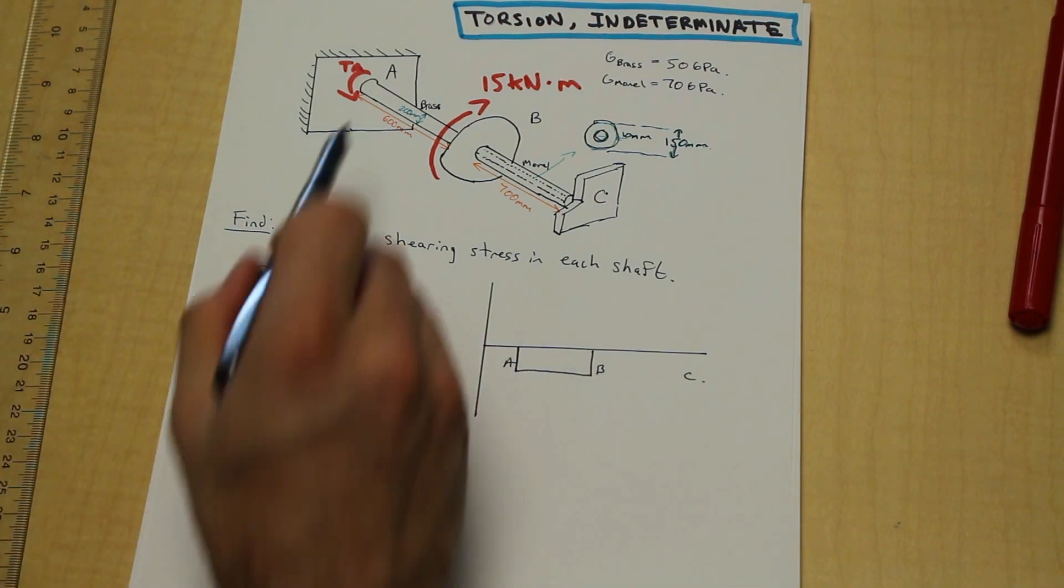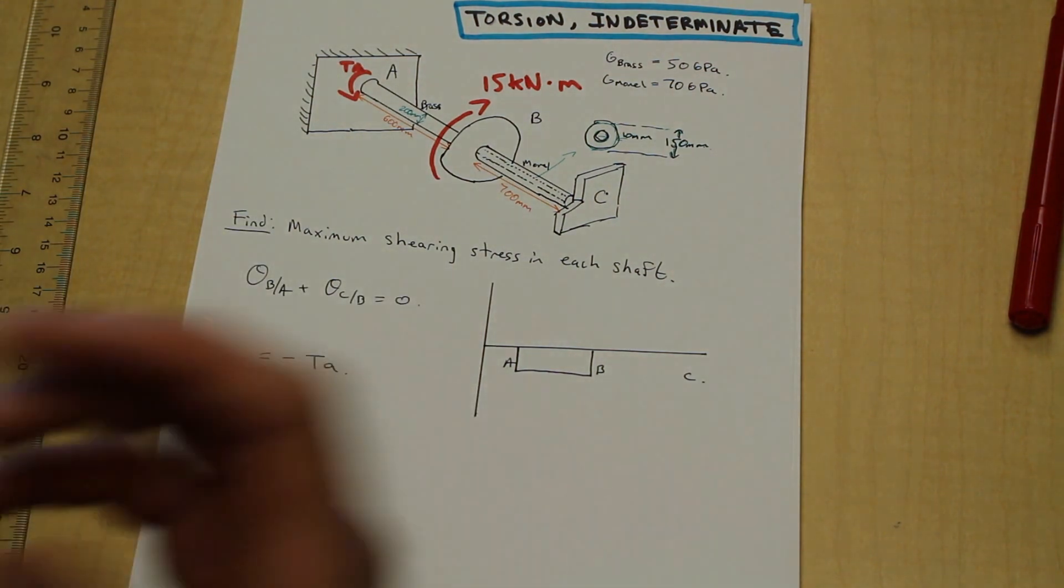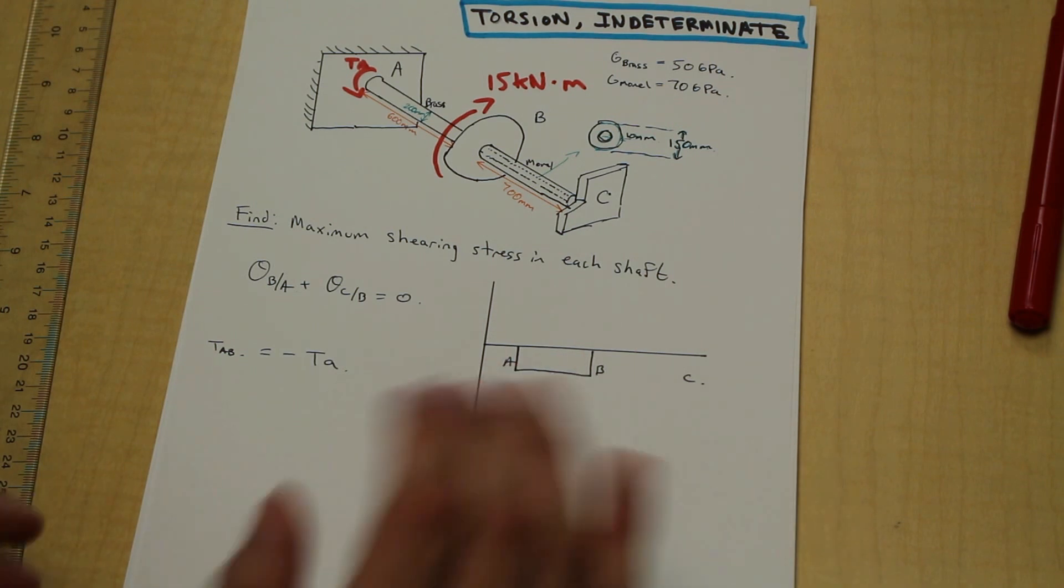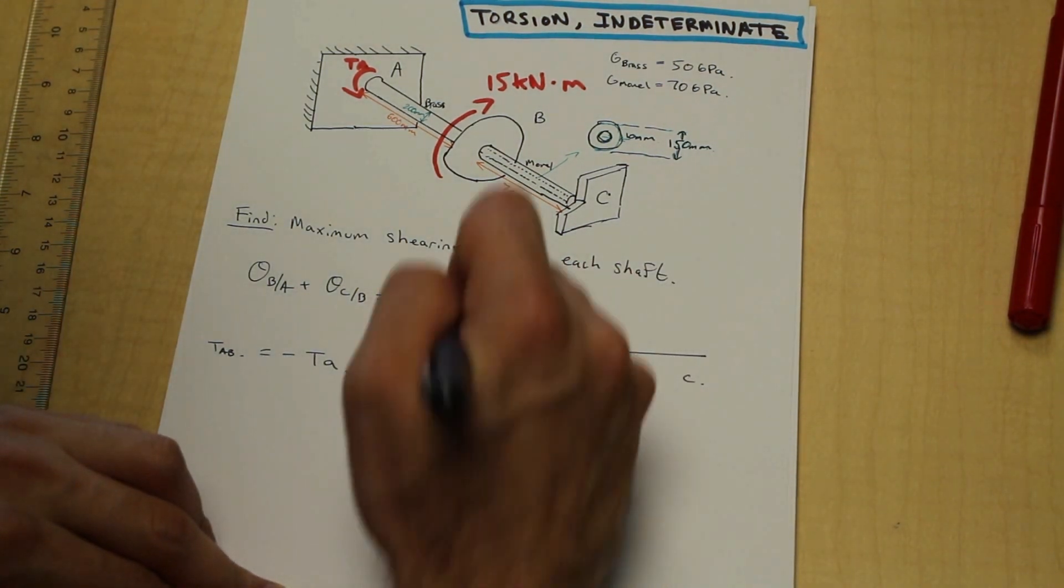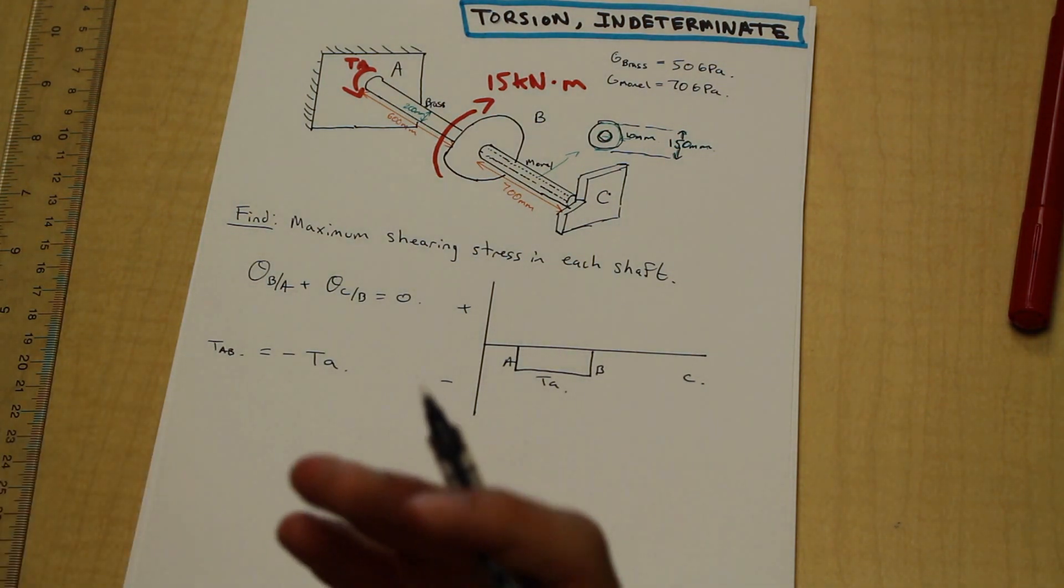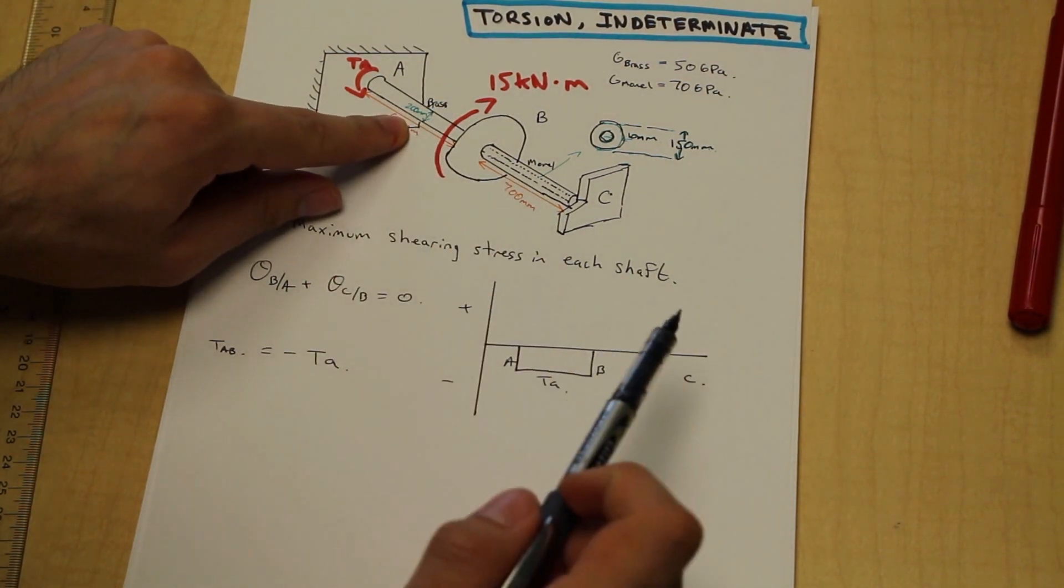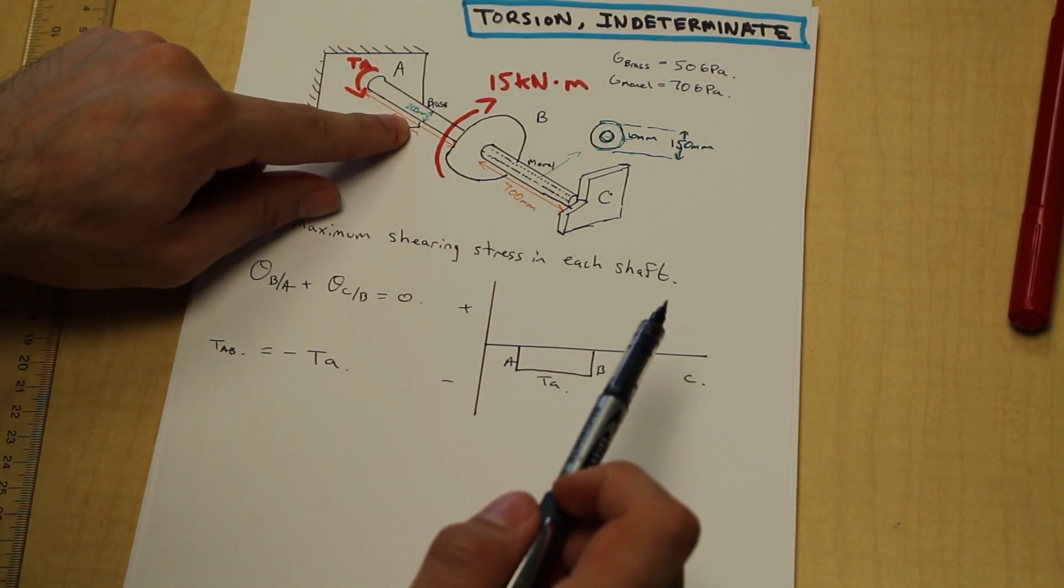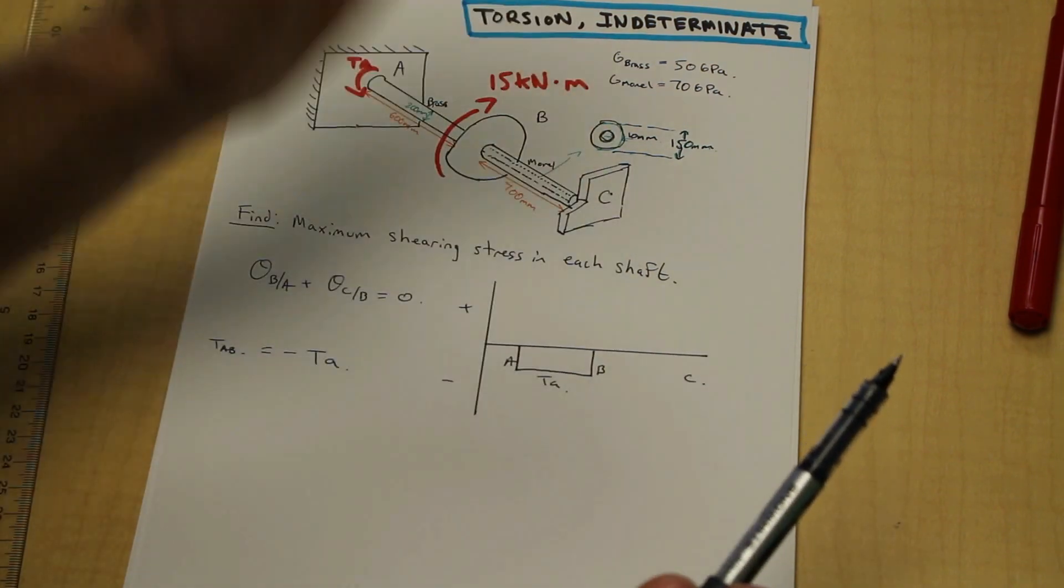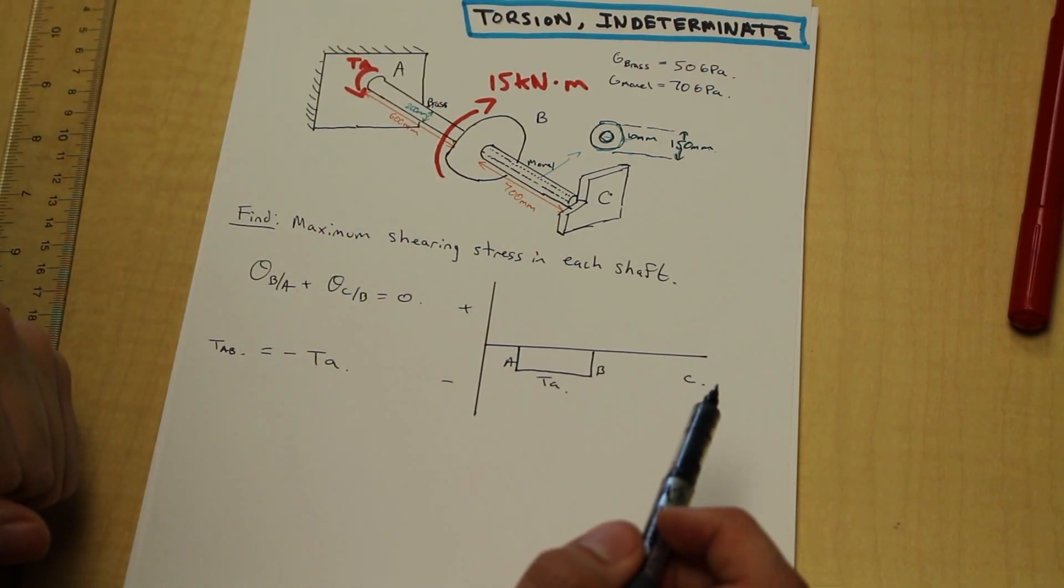So the torque developed, the internal resisting torque in part AB of the shaft is going to be equal to negative TA. So we're going to leave it in terms of negative TA because we don't know what TA is yet and we're going to label that. Next, what's TBC?